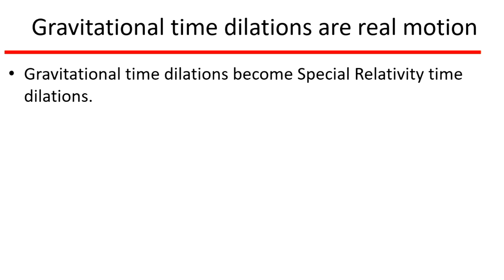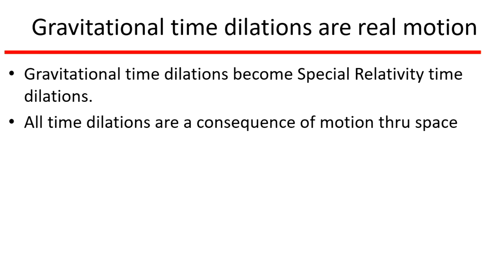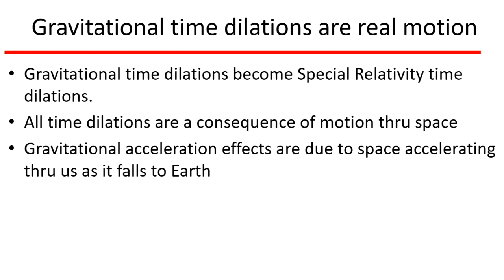What we call gravitational time dilation becomes special relativity time dilation. It means that all time dilation is a consequence of motion through space. What we experience as gravitational acceleration effects are due to space accelerating through us as it falls to Earth, and dragging all objects along with it.